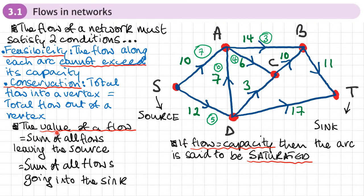To calculate the value of a flow, it equals the sum of all flows leaving the source, which equals the sum of all flows going into the sink. In this example, the flows leaving the source are 7 plus 5, which is 12. That equals the flows going into the sink, so those two arcs into the sink must also add up to 12 — for example, 6 and 6. So the value of this flow is 12.